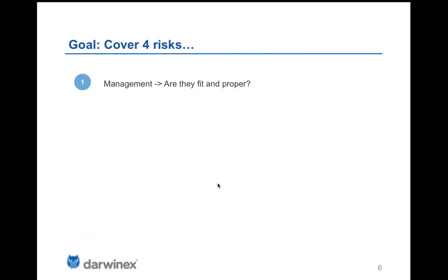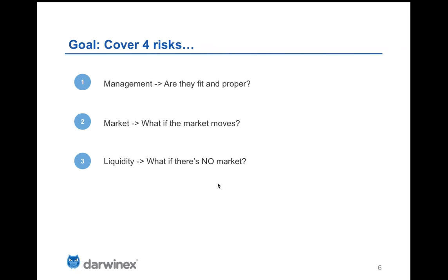As a customer, you want to make sure you understand four risks. The first is management — is it fit and proper: intellectually qualified enough to run a broker, and honest enough to be worthy of the FCA's and customers' trust? Second is market risk — what happens when markets move, as we'll see using the extreme example of the Swiss franc movement on January 15th, 2015. Third is liquidity — what happens in those rare events where the world's most liquid market actually isn't liquid at all. And last, counterparty risk, which I'll explain shortly.